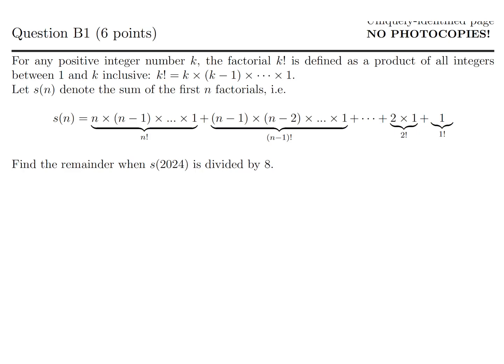For any positive integer number k, the factorial k factorial is defined as a product of all the integers from 1 to k inclusive. So for example, k factorial would be k times k minus 1 all the way down to 1. Let s at n denote the sum of the first n factorials. So s at n would be n factorial plus n minus 1 factorial times n minus 2 factorial all the way down to 1.